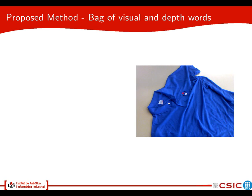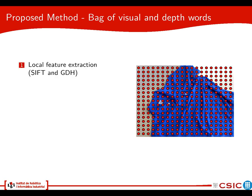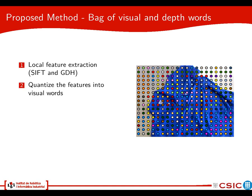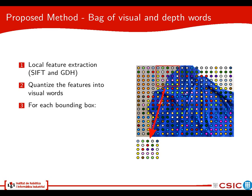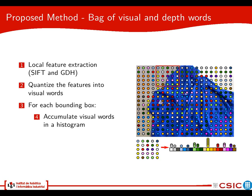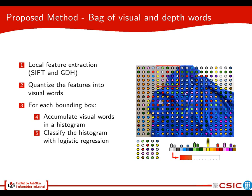The method we propose, we call it 'Bag of Visual and Depth Words,' and the steps are the following. First we extract local features from the image — SIFT and GDH features. Then we quantize them into visual words using a dictionary that we have previously learned. Then we have a bounding box sliding through the image, and at each step this bounding box is selecting a set of visual words that fall inside of it. Then we take these visual words and accumulate them into a histogram, which we feed to a classifier that gives us the likelihood that this particular bounding box contains the part of the object that we are searching.